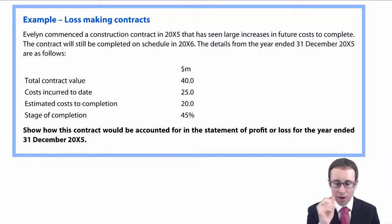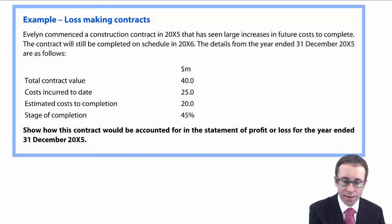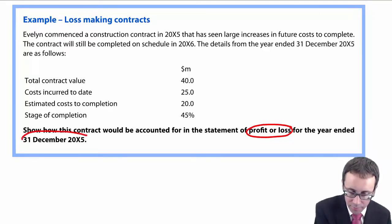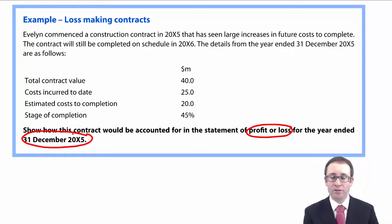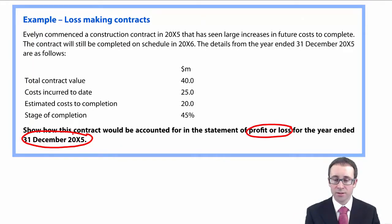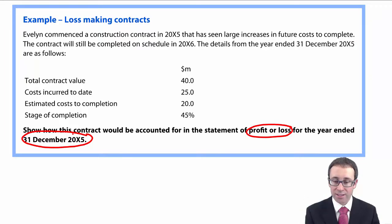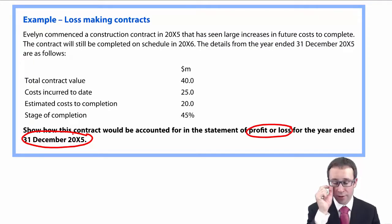We don't base the loss on a stage of completion like we've seen with profitable contracts before — the loss is recognised in full. So it says here, show how the contract will be accounted for in the statement of profit or loss for the year ended December X5. In the question, you wouldn't know it's a loss-making contract until you begin to read it. Evelyn commenced a construction contract in 20X5 that has seen large increases in future costs to complete. The contract will still be completed on schedule in 20X6 — that's the next year — and remember, we started it this year, so that's the first year of the project.